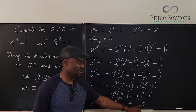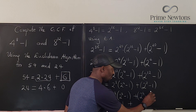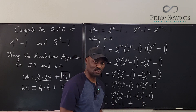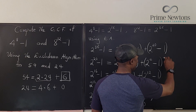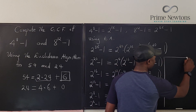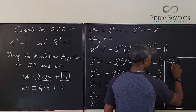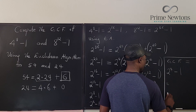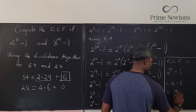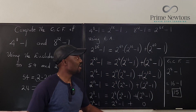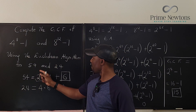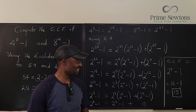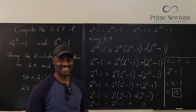As soon as you get remainder 0, the previous remainder becomes your GCF. So the GCF equals 2 to the 4th minus 1, which is 16 minus 1, which equals 15. If you had a giant calculator that could write out these numbers, you'd find that the biggest number that divides both of them is 15. Never stop learning — when you stop learning, you stop living. Bye-bye.